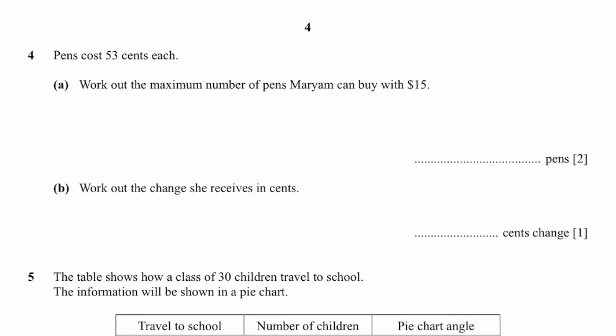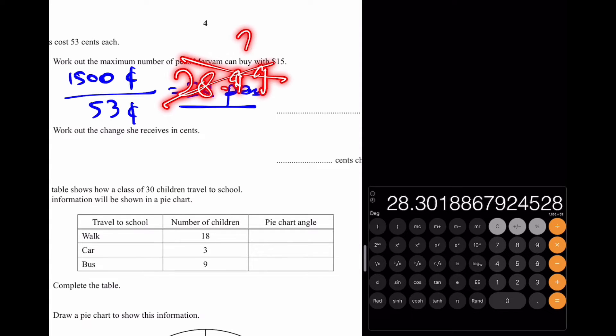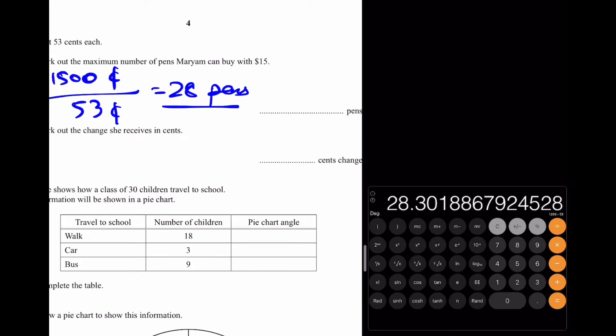Now I can go to question 4. Pens cost 53 cents each. Part A: Work out the maximum number of pens Mariam can buy with 15 dollars. That'll simply be equal to 15 dollars which is 1500 cents divided by the cost of one pen, 53 cents. Let's calculate that out: 1500 divided by 53 which is 28 pens. Since we have to round down to the nearest whole number. Why? Because pens cannot really be split in half or split into any fraction. Therefore whole numbers are the only things accepted.